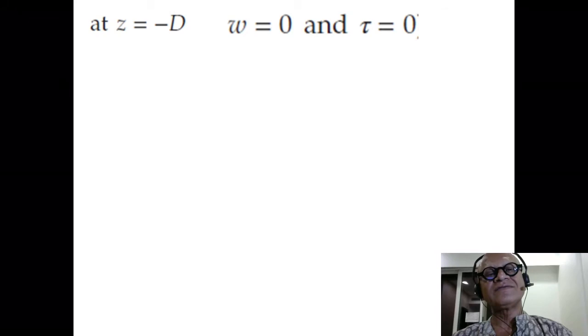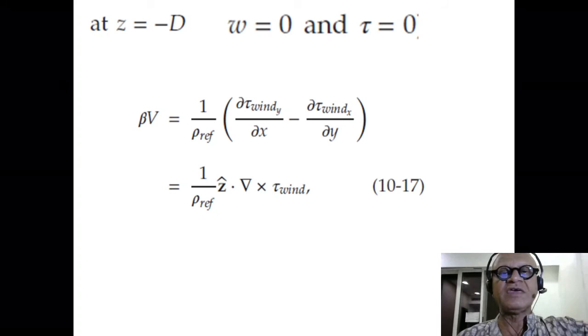You can see d/dx, d/dy and d/dz is taken outside. We know what this is. This is going to give us the Ekman pumping. At z equals minus d, w is zero and tau is zero, so we are at the bottom. And beta v in that expression we had derived before is 1 over rho_ref (d tau_y/dx minus d tau_x/dy), which is our wind stress curl. That is basically 1 over rho f z-hat dot grad cross tau_wind. This is a vectorial expression of this scalar wind stress curl.